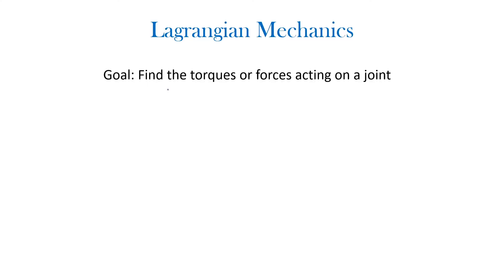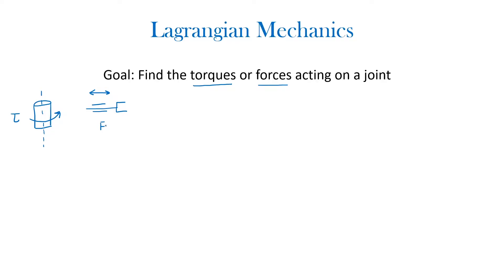The main goal in Lagrangian mechanics is to calculate the torques or the forces acting on a joint or a robot. So up to now we've discussed two main types of joints: revolute joints and prismatic joints. A revolute joint would rotate along some axis of rotation and, due to it being a rotational body, it would have a torque acting upon it. On the other hand, the prismatic joint would simply move linearly up or down and therefore would have a force acting on it.